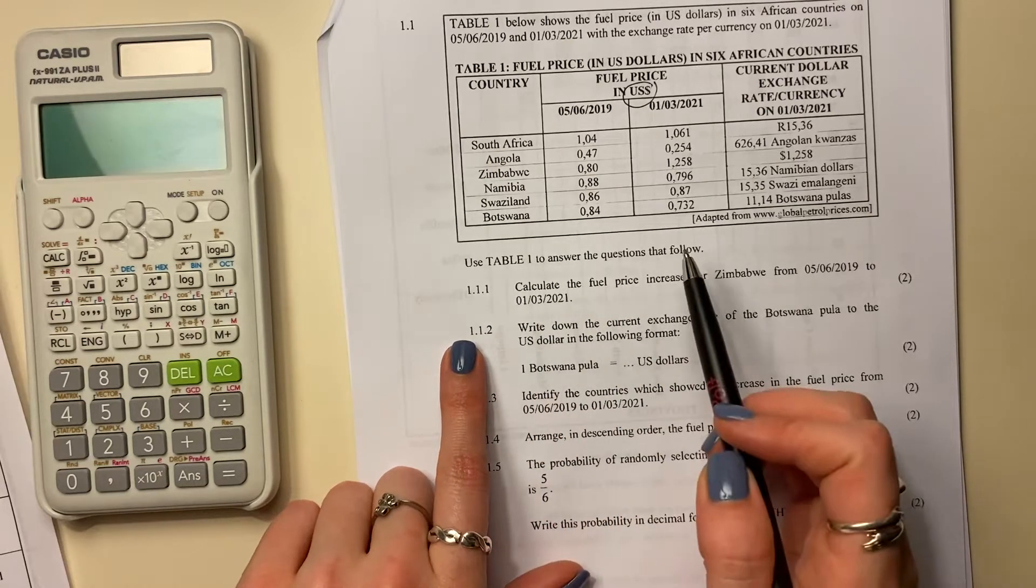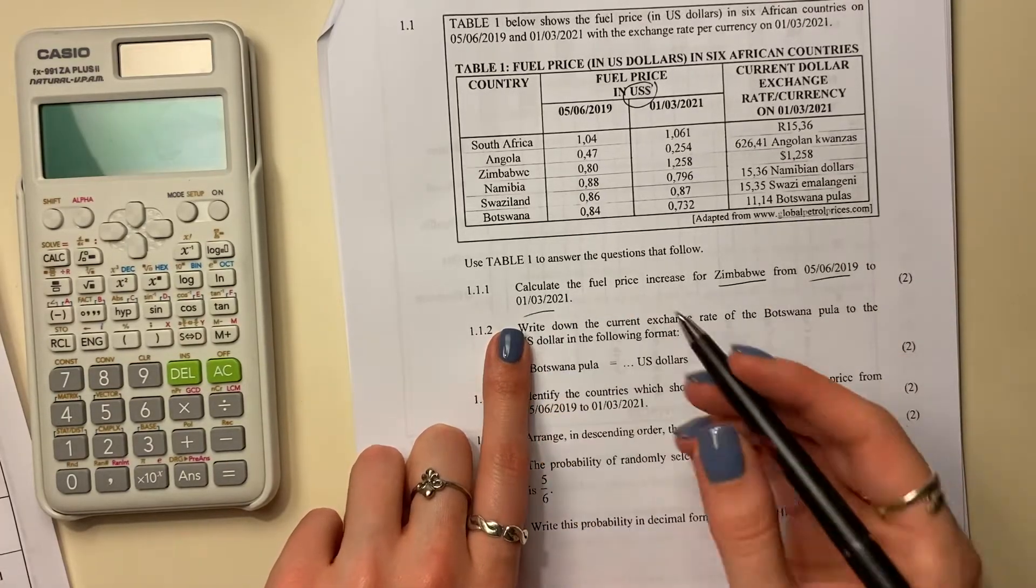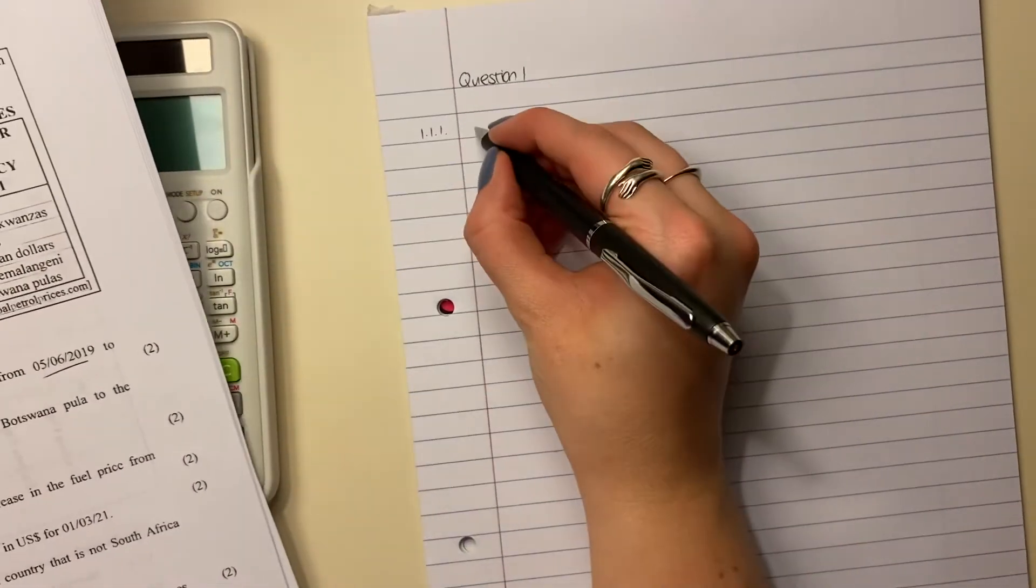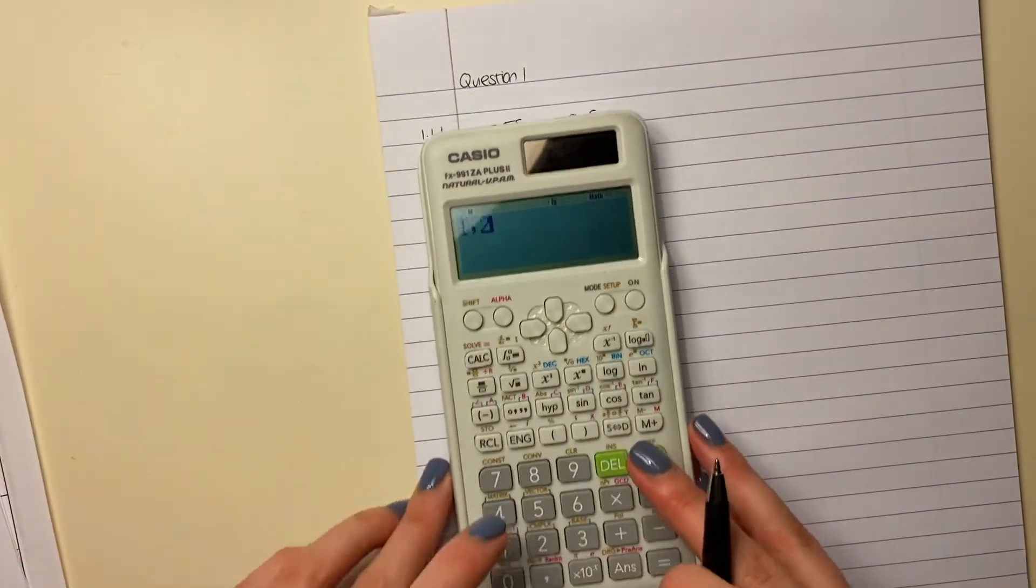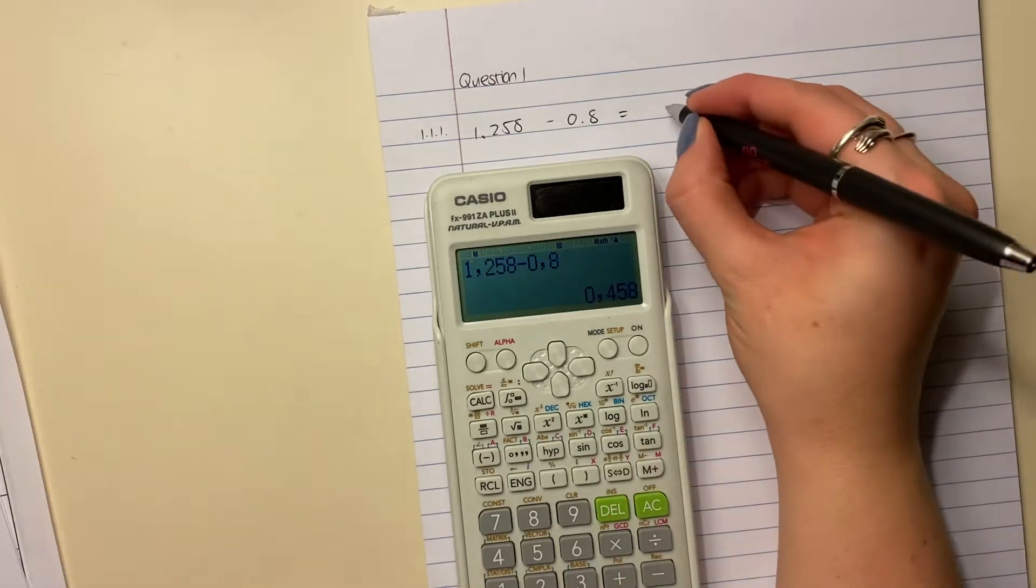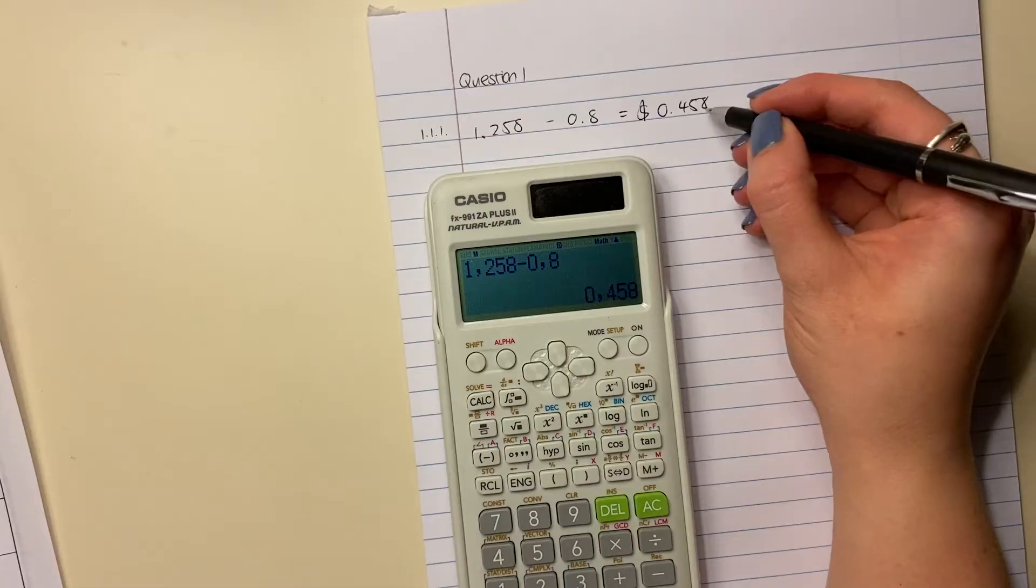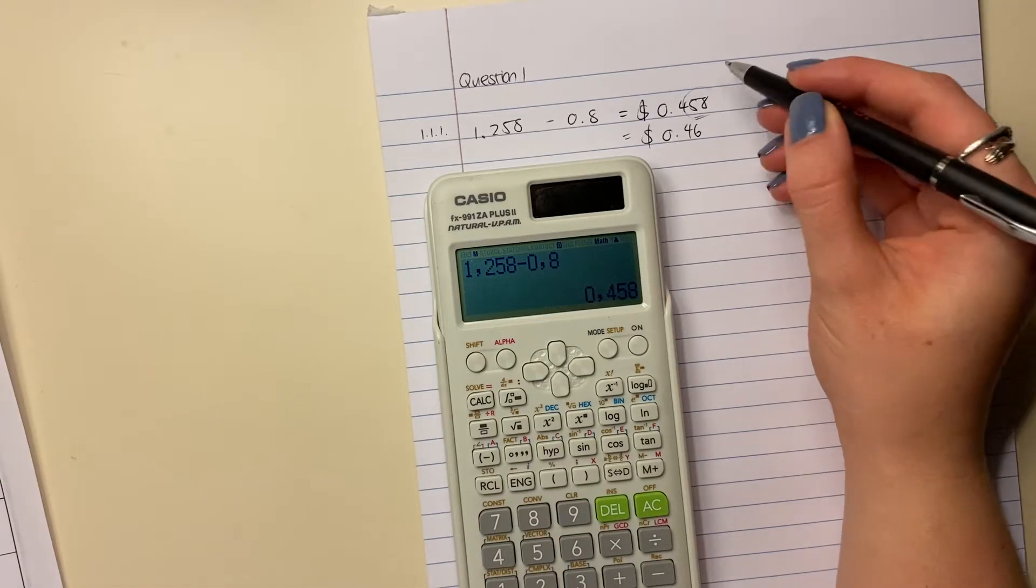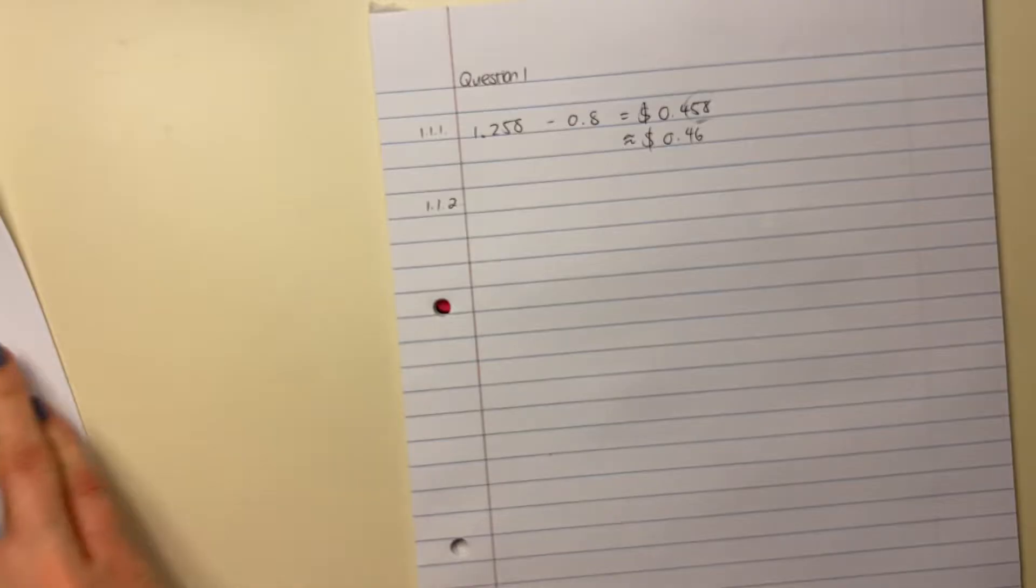It says use table one to answer the questions that follow. 1.1.1. Calculate the fuel price increase for Zimbabwe from this date to this date. So there's my girl Zimbabwe. We're literally going to calculate the difference there. So we're going to say 1.258 because that was the large amount, and we're going to take off 0.8. And then that will be our difference. So pop that into your calculator. 1.258 minus 0.8. And the answer is 0.458. Now, importantly, you have to state the currency and would be in US dollars. You can't actually state a currency with this many decimal places. So you should actually state it like this. But because it's just saying the difference, you can leave it like that. But I would kind of write both like this just to make sure that you've covered all your bases.